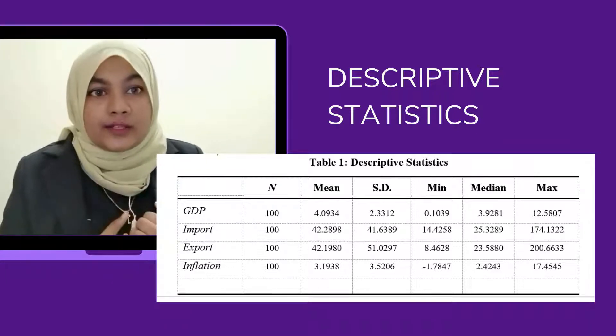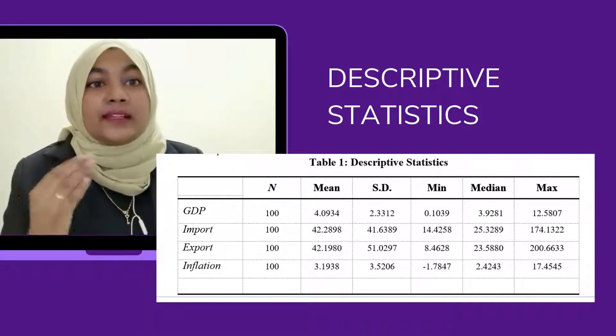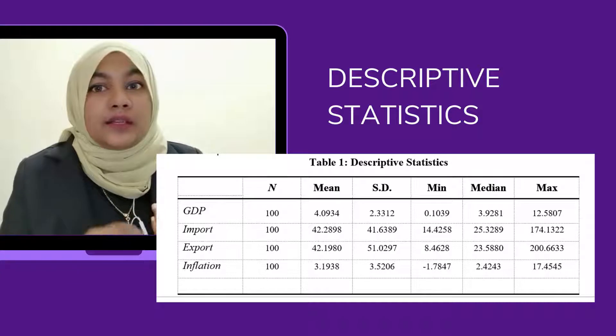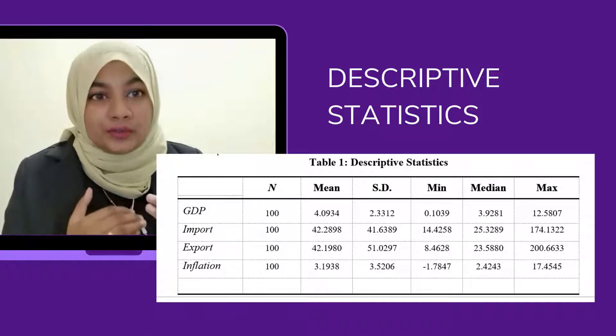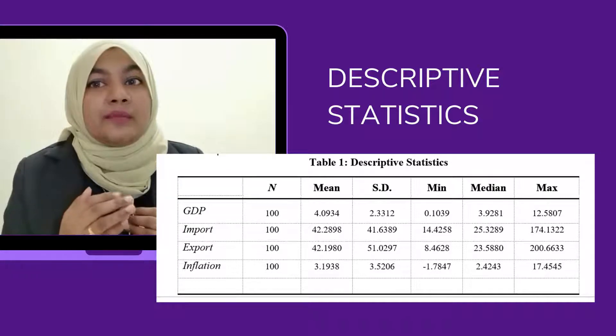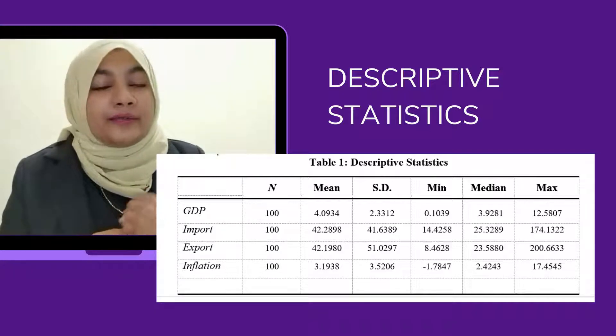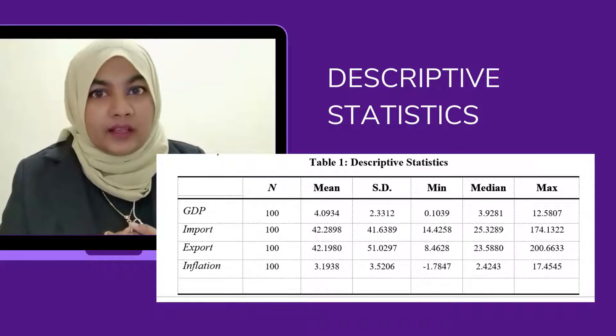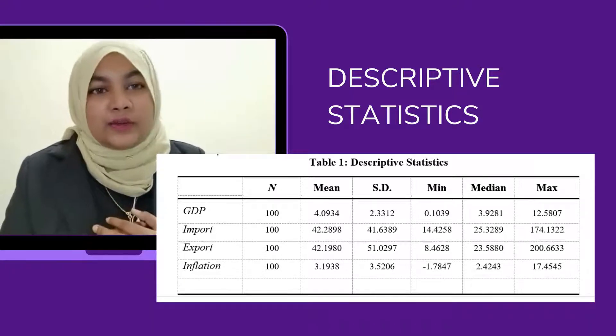Based on the results in descriptive statistics shown in Table 1, for example taking GDP: the mean is 4.034, the standard deviation is 2.3312, the minimum is 0.1039, the median is 3.928, and the maximum is 12.5807. All variables have positive values with no negative values in this project.